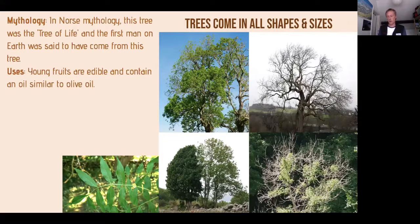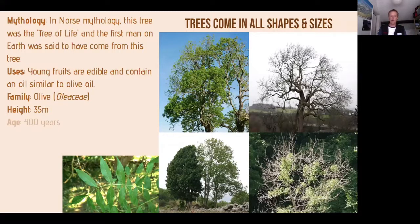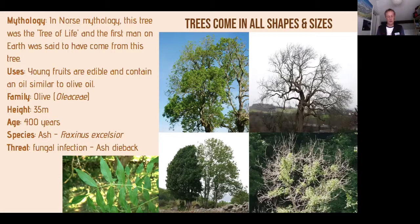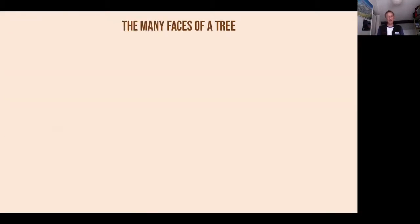The young fruits are edible and contain an oil similar to olive oil. It is a member of the olive family — that may be a clue. It's a very grand, tall tree at 35 meters and lives up to 400 years. It is the ash tree. It has a fungal infection called ash dieback which has been around for 30 years, came from China, was introduced to Britain around 2006, and is affecting a huge number of our native ash trees. It essentially clogs the arteries of the tree.